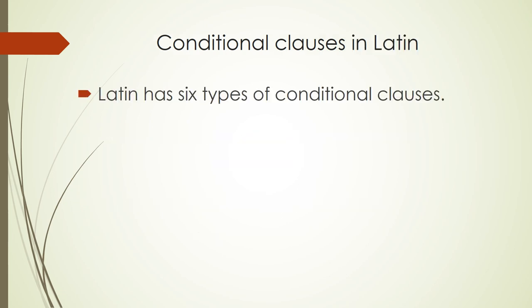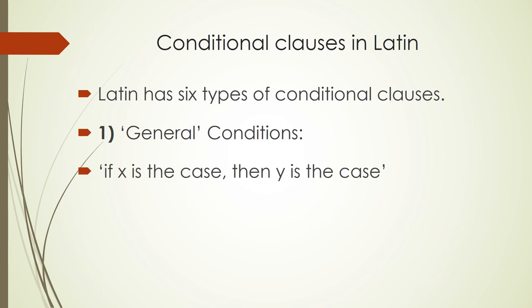Latin has six types of conditional clauses, but don't worry — this is nowhere near as bad as it sounds. The first category, which covers three of the six types, is the general condition: if A, then B; if X is the case, then Y is the case. We just had an example of that in English: if she's hungry, she has a snack.